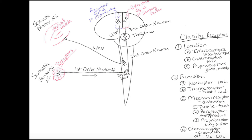This neuron we call an upper motor neuron. It synapses onto another multipolar motor neuron — the lower motor neuron — which leaves the central nervous system and ends on a skeletal muscle. So we have an upper motor neuron synapsing on a lower motor neuron, and that goes out to the skeletal muscle.